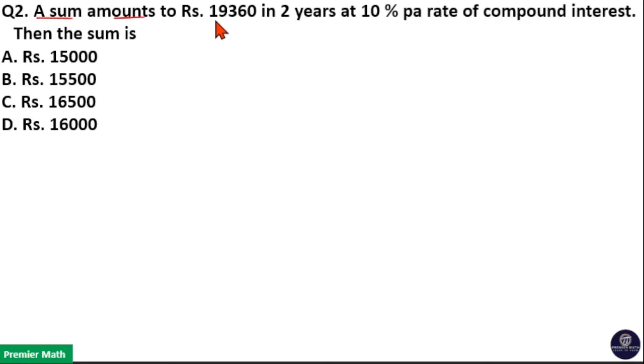A sum amounts to Rs. 19,360 in 2 years at 10% per annum rate of compound interest. Then the sum is, here it is compound interest and rate of interest is 10% per annum.